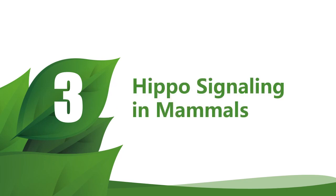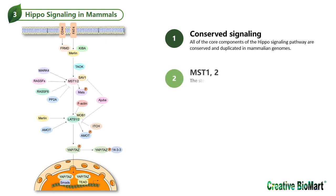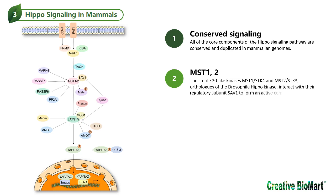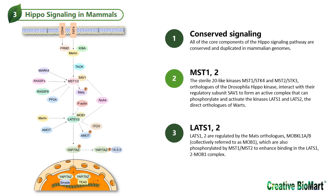Hippo signaling pathway in mammals. All of the core components of the Hippo signaling pathway are conserved and duplicated in mammalian genomes. The sterile 20-like kinases MST1 and MST2, orthologues of the Drosophila Hippo kinase, interact with the regulatory subunit SAV1 to form an active complex that can phosphorylate and activate the kinases LATS1 and LATS2, the direct orthologues of Warts. LATS1 and LATS2 are regulated by the Mats orthologues MOB1, which are also phosphorylated by MST1 and MST2 to enhance binding in the LATS1/2-MOB1 complex.